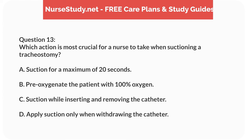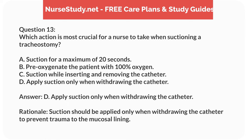Question 13. Which action is most crucial for a nurse to take when suctioning a tracheostomy? A. Suction for a maximum of 20 seconds. B. Preoxygenate the patient with 100% oxygen. C. Suction while inserting and removing the catheter. D. Apply suction only when withdrawing the catheter. Answer: D. Apply suction only when withdrawing the catheter. Rationale: Suction should be applied only when withdrawing the catheter to prevent trauma to the mucosal lining.